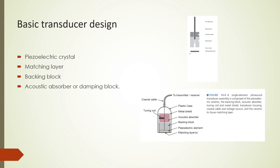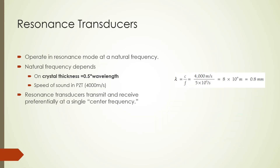A basic ultrasound transducer can be made from a single crystal element. The main parts are a matching layer, a crystal, a backing block, and an acoustic absorber. Resonance transducers operate at a natural frequency that depends on crystal thickness and the speed of sound in the crystal. For a PZT crystal, the thickness needed for a 5 MHz natural resonance frequency is calculated by dividing the speed of 4000 m/s by 5 MHz, giving a wavelength of 0.8 mm. Dividing the wavelength by 2 gives a crystal thickness of 0.4 mm. Resonance transducers transmit and receive preferentially at a single center frequency.